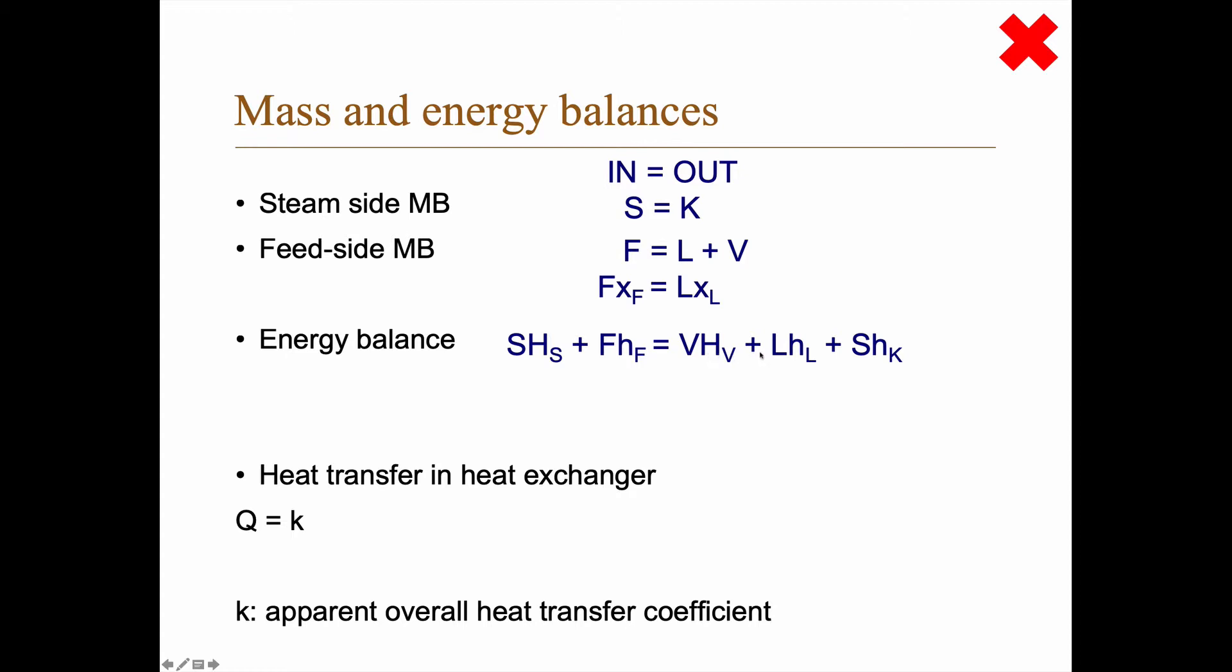And now I've written already S times h_K here rather than K times h_K because, well, the steam side mass balance is so simple, so we can just ignore the K and say that we set up the equipment such that we refuse to let any uncondensed steam out. So what comes out is the condensate, period.